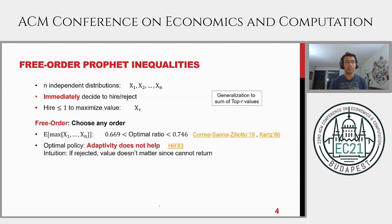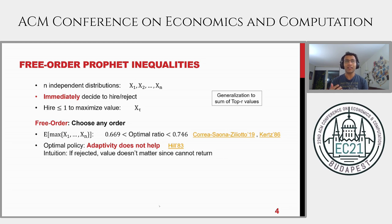What's known about this free-order problem? For the expected max benchmark, you can do better than a two-approximation, but the exact approximation ratio is not known — it's somewhere between 1/2.5 and 1. For the optimal policy benchmark, you might wonder whether the optimal algorithm is allowed to be adaptive, meaning it chooses the next candidate based on the value of the current one. It turns out — as shown by Hill in the 1980s — that adaptivity does not help for this problem. The optimal algorithm can always be assumed to be a fixed order.